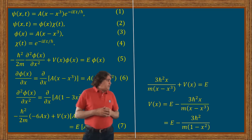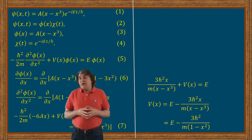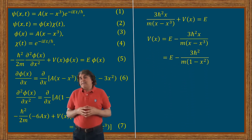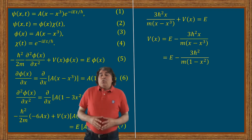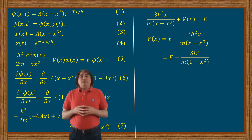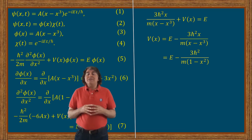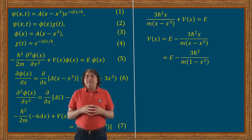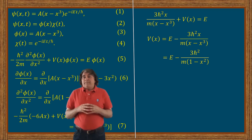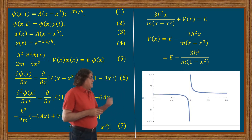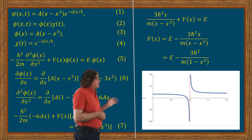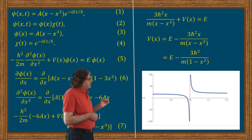Thus the potential is a function of x squared, and depends on the mass of the particle, the total energy E, and the position x. We can analyze this form of the potential by plotting it for a constant energy E against position x, for a particle of mass 1 and setting ℏ equal to 1. If I plot this in Mathematica, this is the resulting form of the potential which gives rise to the wave function given in equation 1.